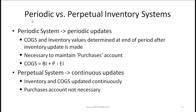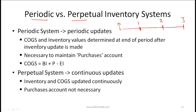Now let's talk about periodic versus perpetual inventory systems. In a periodic system, we make updates to inventory at the end of every period — typically months. So at the end of every month you would make an update. Essentially, cost of goods sold and inventory values are determined at the end of a period after the inventory update is made, so it is necessary to maintain a purchases account.